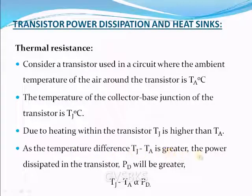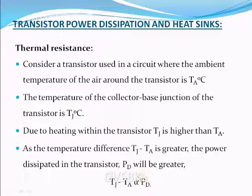As the temperature difference Tj minus Ta is greater, the power dissipated in the transistor Pd will be greater. Therefore, Tj - Ta is directly proportional to the power dissipation. Power dissipation is wastage of power in the form of heat — when the transistor is not converting all DC power into AC power, that DC power is wasted. For example, if one watt is input but only half watt goes to the load, the remaining half watt is wasted as heat in the power transistor.